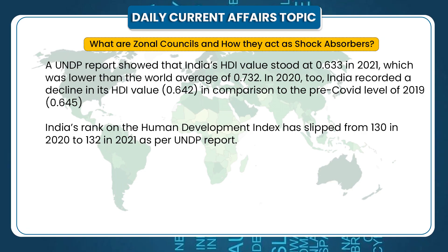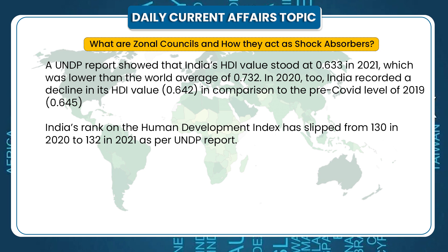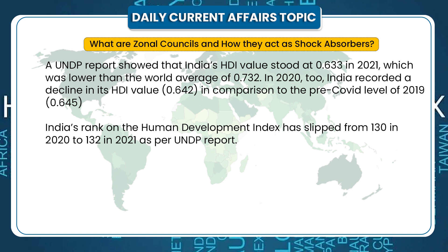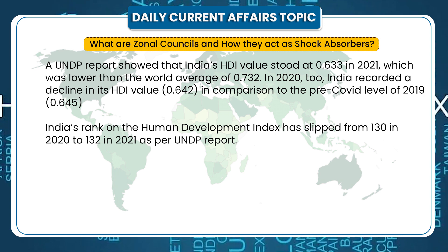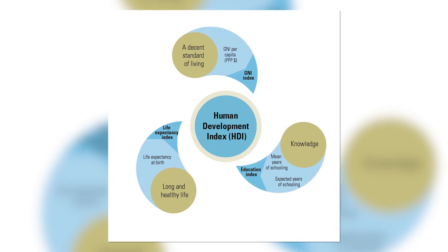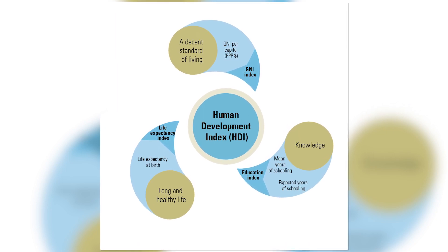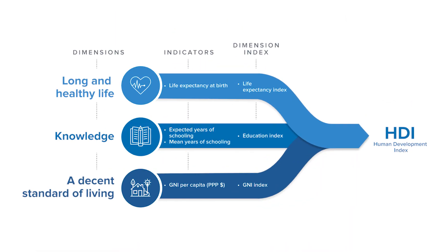In this session, we will discuss the Human Development Index in detail. India's rank on the Human Development Index has slipped from 130 in 2020 to 132 in 2021, as per the United Nations Development Report. The Human Development Index was created to emphasize that people and their capabilities should be the ultimate criteria for assessing the development of a country, not economic growth alone.